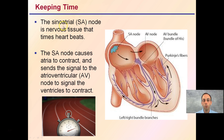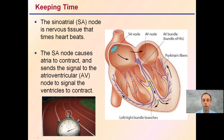The sinoatrial node — the SA node — is nervous tissue that times the heartbeats. We see it located here. The SA node causes the atria to contract and sends a signal to the atrioventricular node, also known as the AV node, located right here.